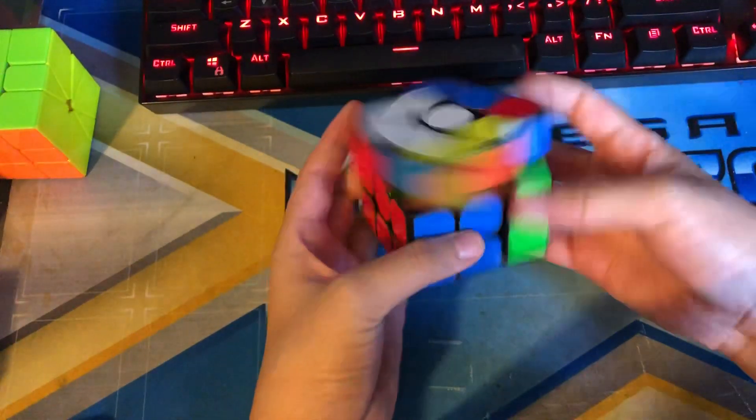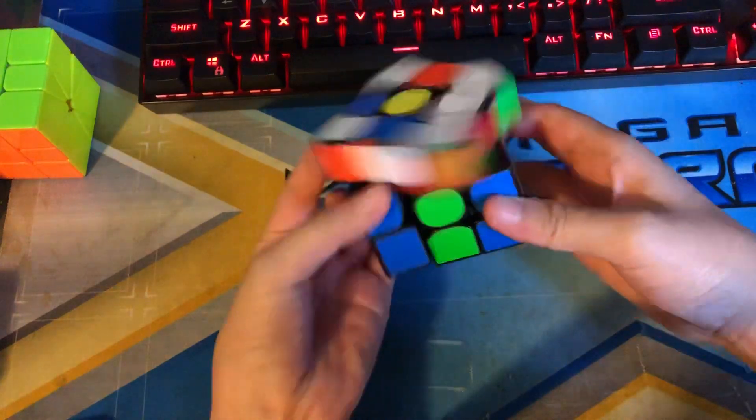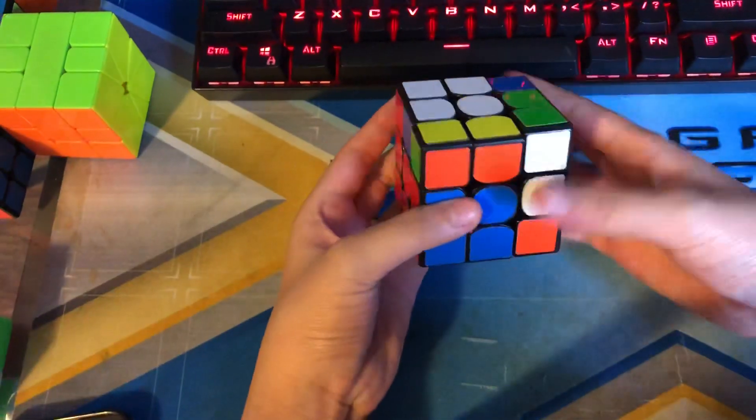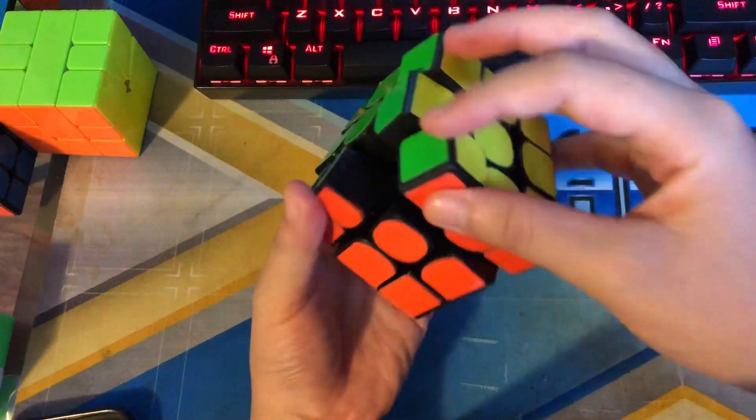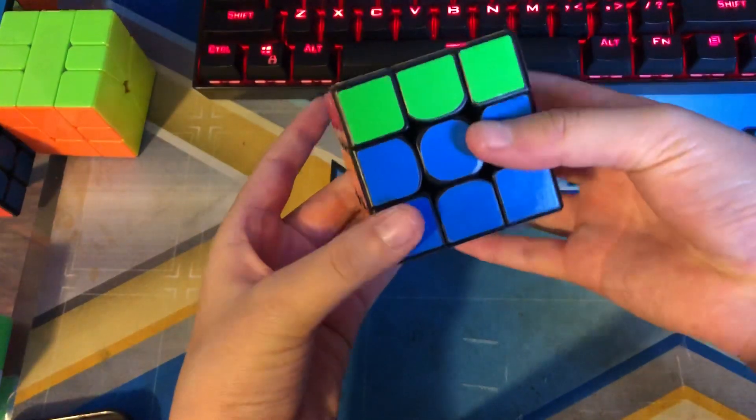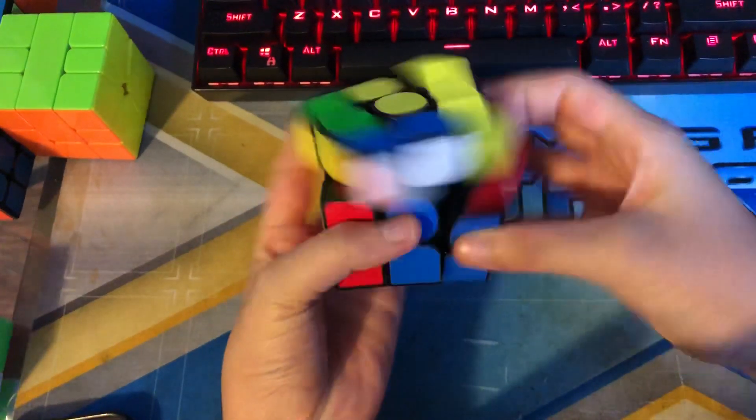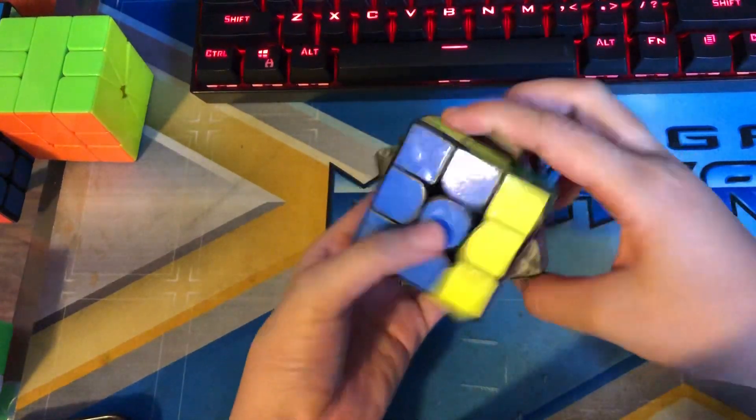But today I'm going to be doing a giveaway for 10,000 subscribers and it's going to be this Yushin Little Magic M. It has magnets in it and it's custom set up for me.